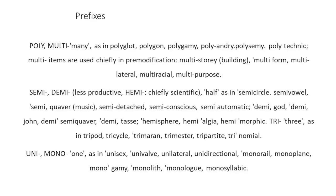'Semi-' — productive — or 'demi-,' and 'hemi-' — chiefly scientific — all mean half. Examples: 'semi-circle,' 'semi-vowel,' 'semiquaver' in music, 'semi-detached,' 'semi-conscious,' 'semi-automatic.' Demi-: 'demigod,' 'demijohn,' 'demi-semiquaver,' 'demi-tasse.' Hemi-: 'hemisphere,' 'hemiplegia,' 'hemimorphic.'